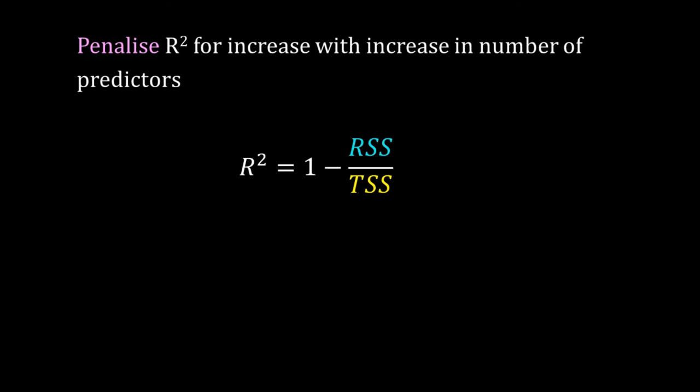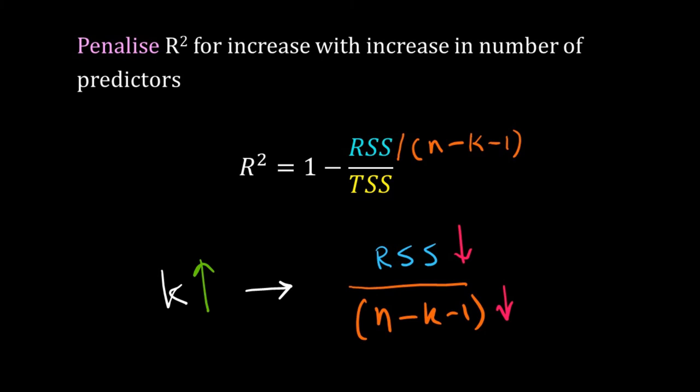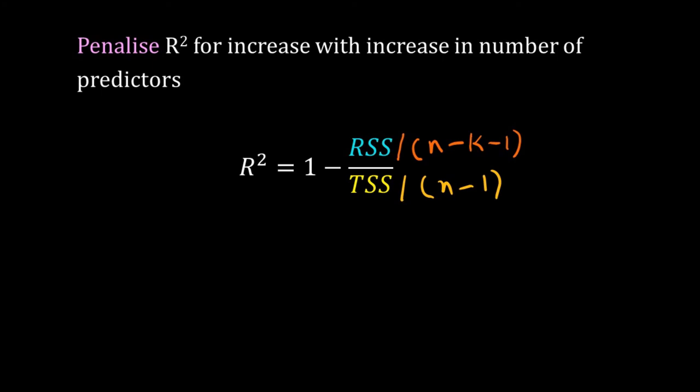One way to do that is to divide the RSS by its degree of freedom n minus k minus 1. As the number of predictors increases, both RSS and n minus k minus 1 decreases. So in the ratio form, they adjust each other. Similarly, divide TSS by its degree of freedom n minus 1. This does not have k. So the number of predictors does not affect it.